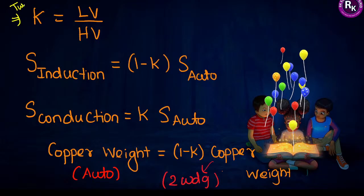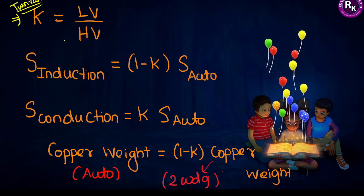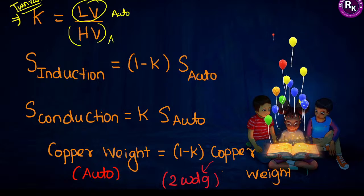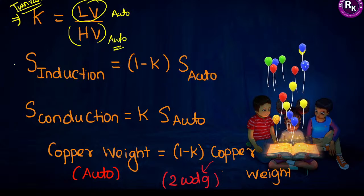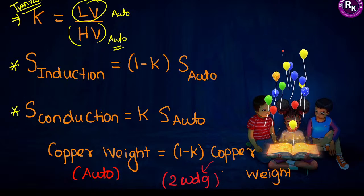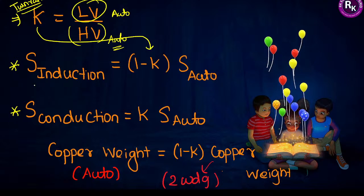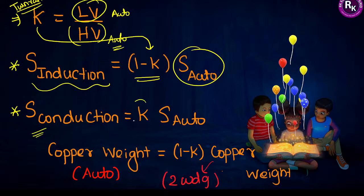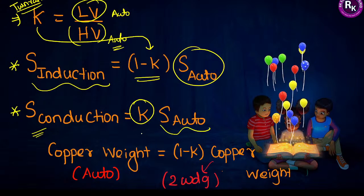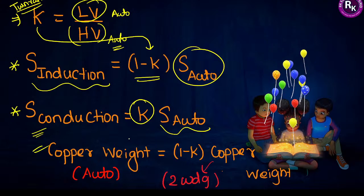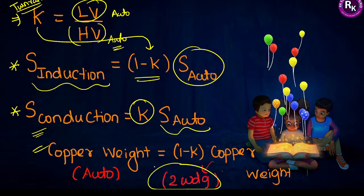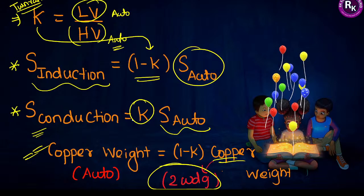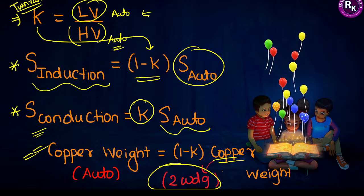In the auto transformer, the turns ratio K is defined as the ratio of the low-voltage winding value to the high-voltage winding value of the auto transformer. Using K: inductively transferred apparent power = (1 − K) × total KVA rating of the auto transformer, and conductively transferred power = K × total KVA rating of the auto transformer. An important exam question involves copper weight: copper weight of auto transformer = (1 − K) × copper weight of the two-winding transformer.